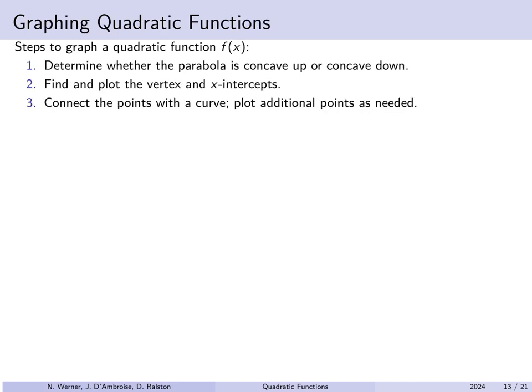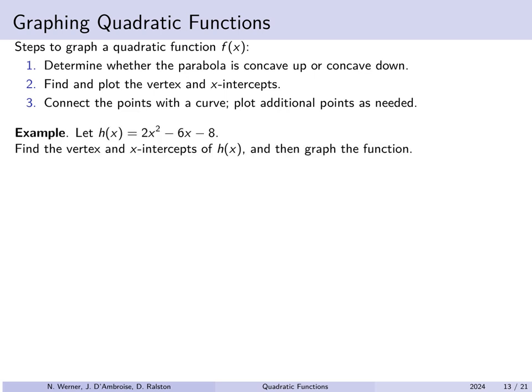How do we graph a quadratic function? There's a three-step process: first, determine whether it's concave up or concave down; then find and plot the vertex and intercepts; then connect the points with the appropriate parabola, plotting additional points if necessary. For example, let's look at h(x) = 2x² − 6x − 8. Find the vertex, x-intercepts, and graph.